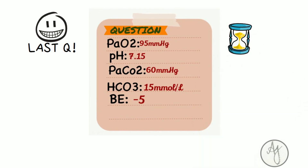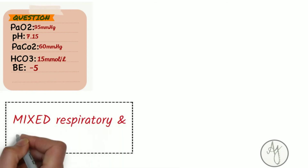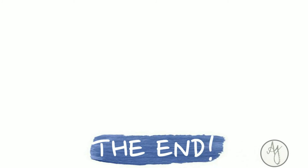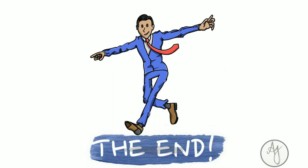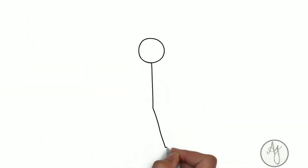Coming to the last question — your time starts now. This one is a little different to show how many types of ABG can exist. This is a mixed respiratory and metabolic acidosis. The pH is acidotic and it matches both the bicarbonate and carbon dioxide — both values are also acidotic. The base excess is −5, indicating a metabolic acidosis component. So this is a true mixed acidosis.